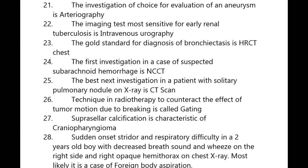The imaging test most sensitive for early renal tuberculosis is intravenous urography. The gold standard for diagnosis of bronchiectasis is HRCT. The first investigation in a case of suspected subarachnoid hemorrhage is NCCT. The best next investigation in a patient with a solitary pulmonary nodule on X-ray is CT scan. The technique in radiotherapy to counteract the effect of tumor motion due to breathing is called gating.